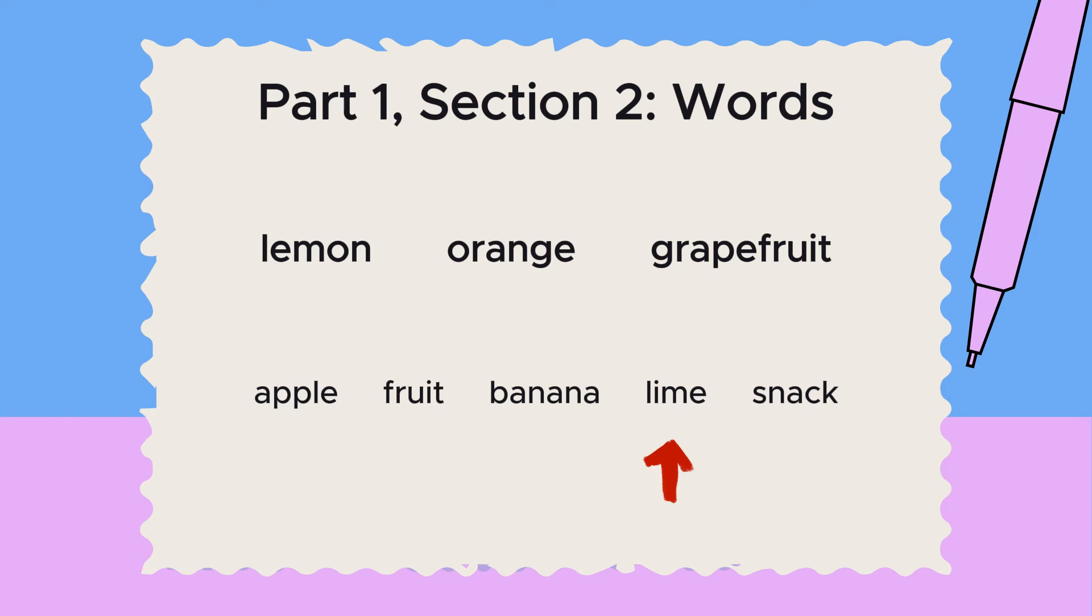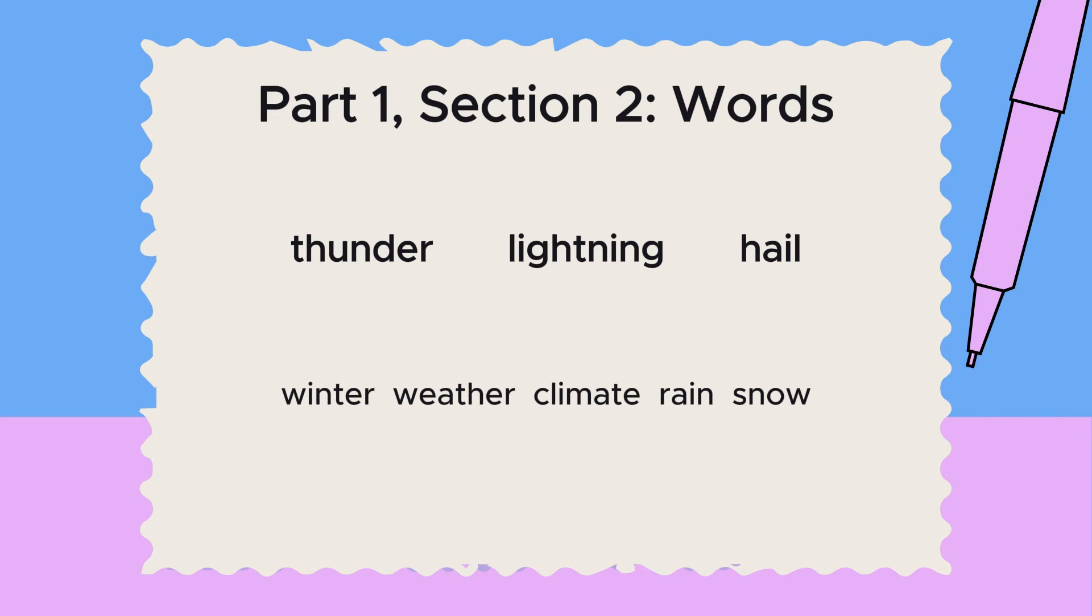Let's try another question from this section. The first three words are thunder, lightning, and hail. These are all parts of a thunderstorm. Therefore, we need to select the answer choice that is also part of a thunderstorm. The correct answer is rain.